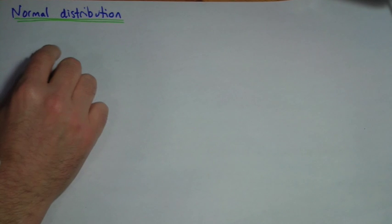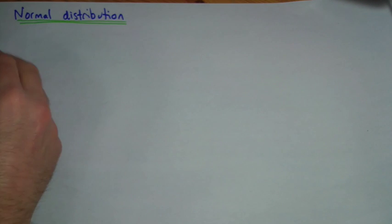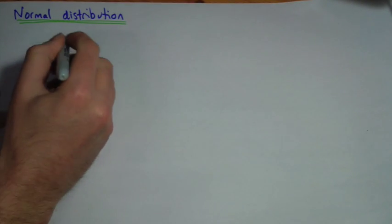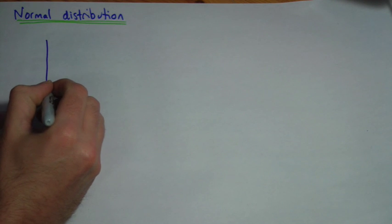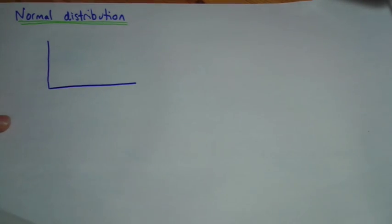What's known as normal distribution, this is really a mathematical term, normal. It doesn't mean normal in the everyday sense of the word, meaning not abnormal, not weird. It doesn't mean that at all. It's a particular distribution of data or information.